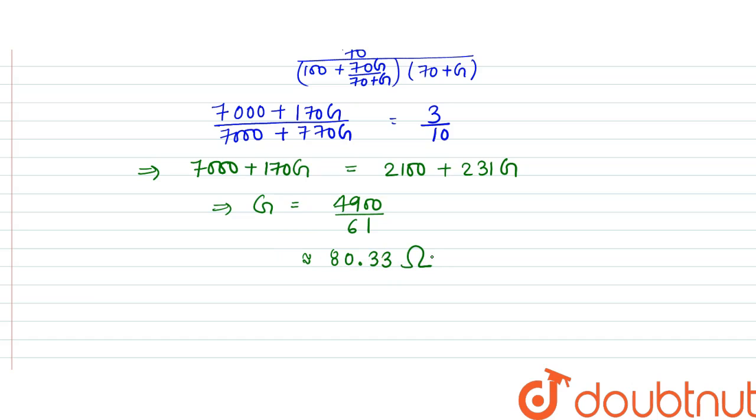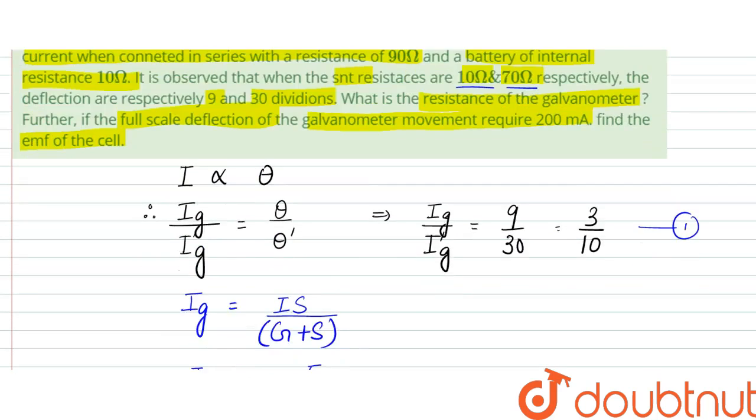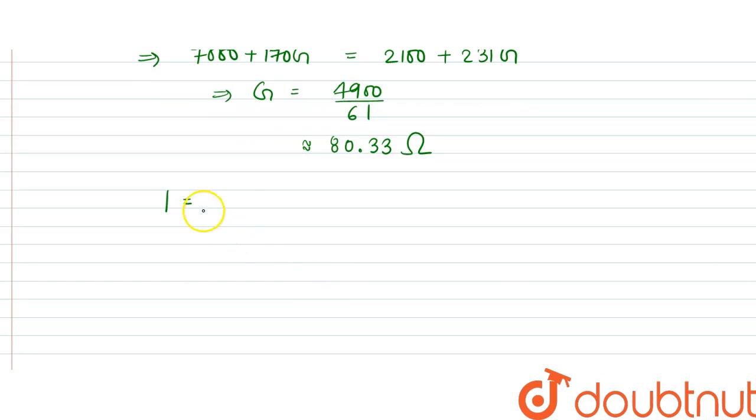The current given to us for full deflection is 200 milliampere, which is 200 by 1000, that means 0.2 ampere. According to Ohm's law, the emf would be equal to I into G, which equals 0.2 into 80.33, which is approximately 16.06 volts.